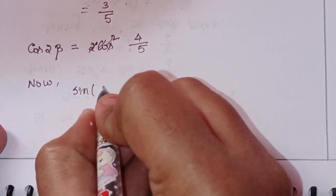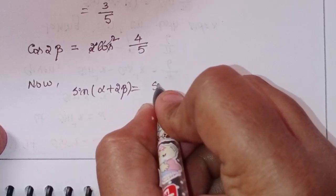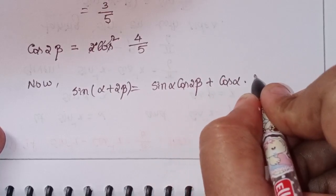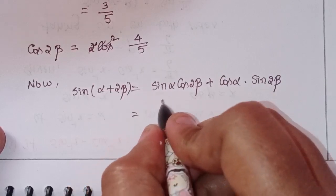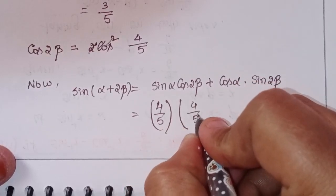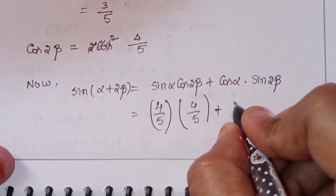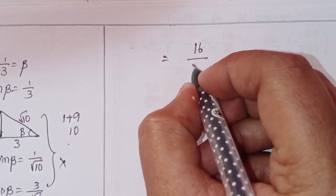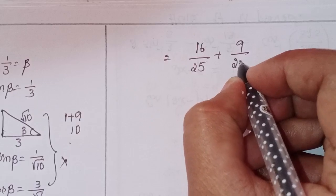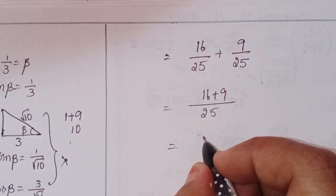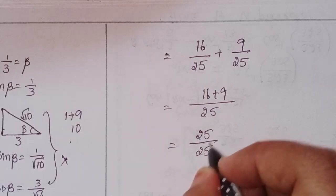sin(α + 2β) = sin(α)·cos(2β) + cos(α)·sin(2β). sin(α) = 4/5, cos(2β) = 4/5, cos(α) = 3/5, sin(2β) = 3/5. So: (4 × 4)/(5 × 5) + (3 × 3)/(5 × 5) = 16/25 + 9/25. LCM is 25, giving 25/25.